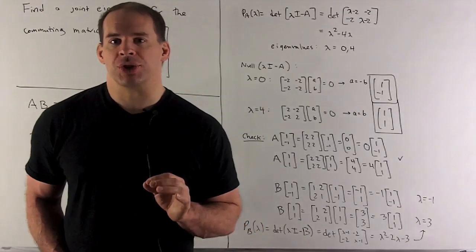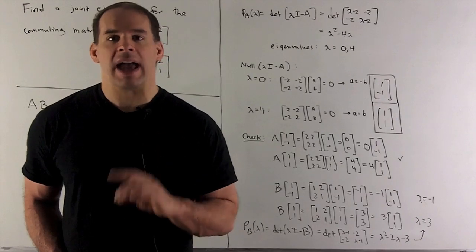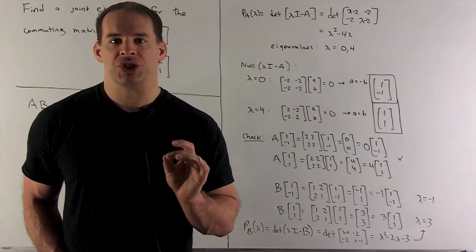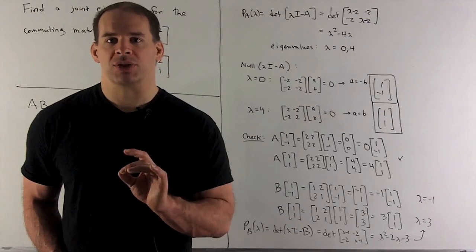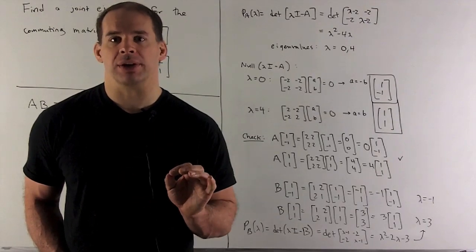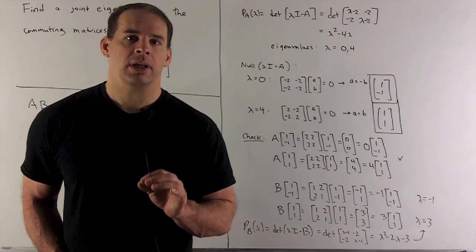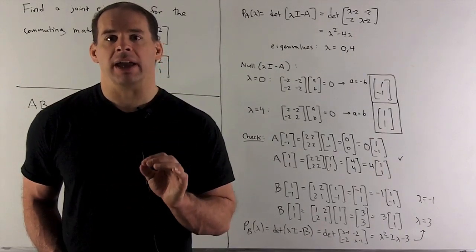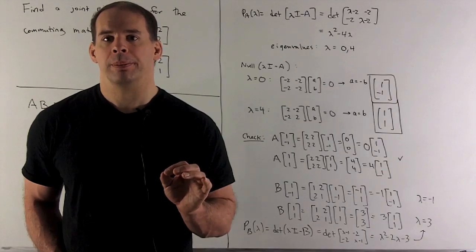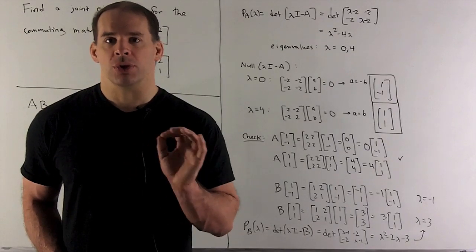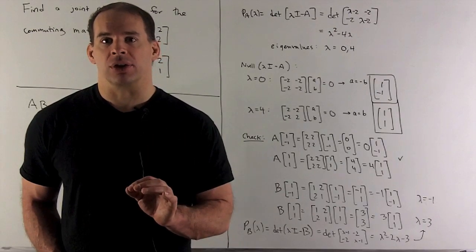Let's see how we get to our answer computationally. What we're going to do is find any eigenbasis for A, and then we'll check that it works for B also. Sometimes this approach works, sometimes it doesn't — since our example is small, it's going to work. To get an eigenbasis for A, first I find the characteristic polynomial, look for the roots — those are the eigenvalues — and once I have the eigenvalues, I can get the eigenvectors.